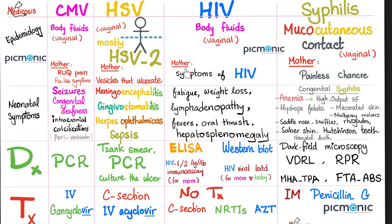HIV — in the mother, symptoms of HIV are a very big topic. Neonatal symptoms include fatigue, weight loss, lymphadenopathy, lethargy, fevers, oral thrush, and hepatosplenomegaly — very similar to infectious mononucleosis in its presentation. Diagnosis: the old school ELISA and Western blot; nowadays HIV-1/HIV-2 antigen-antibody immunoassay and viral load should suffice. The antigen-antibody immunoassay is for the mother, but the viral load is for both mother and baby.